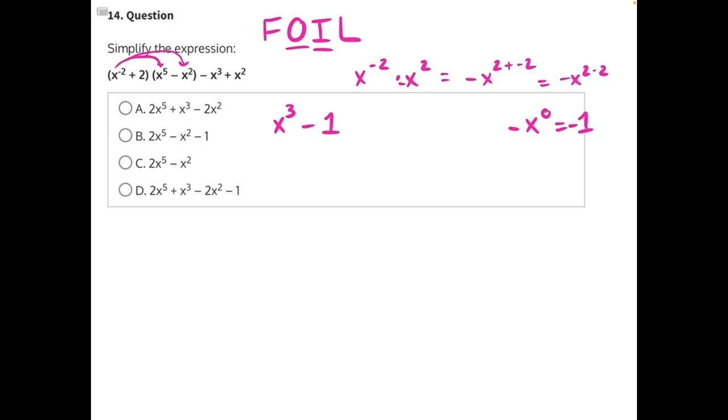Then we go on to our inner terms. Two times x to the five would give us plus two x to the five. Then two times negative x squared would give us negative two x squared.